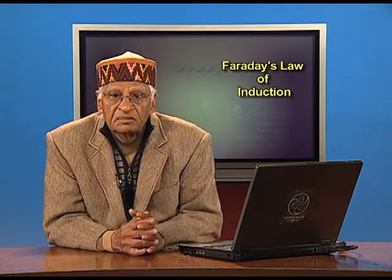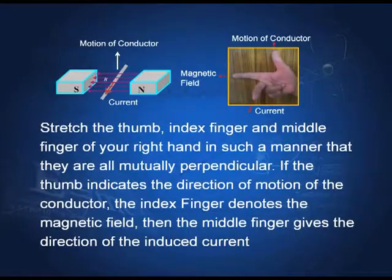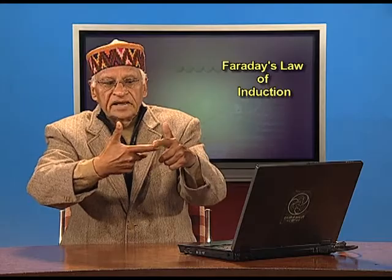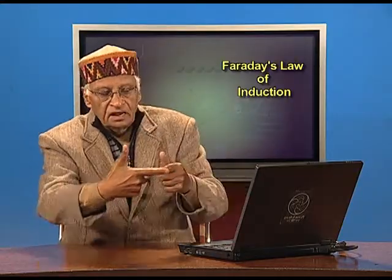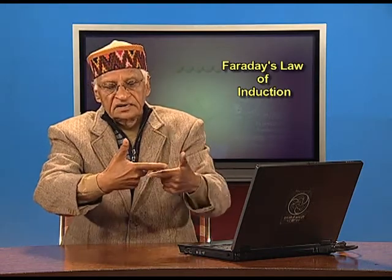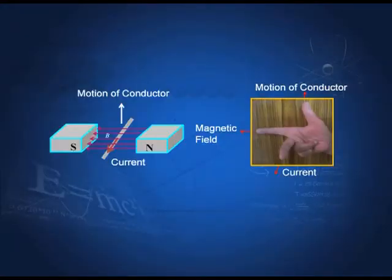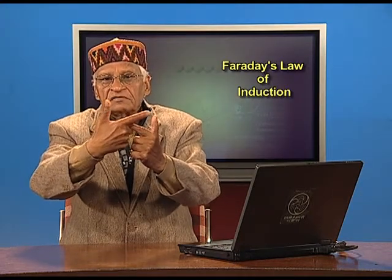What is the direction of the induced EMF? That is given by Fleming's right hand rule. You take your right hand, extend the thumb, the index finger and the middle finger so that they are all mutually perpendicular. If the index finger represents the magnetic field direction and the thumb represents the direction of motion of the conductor, then the middle finger shows you the direction in which the current will be produced.